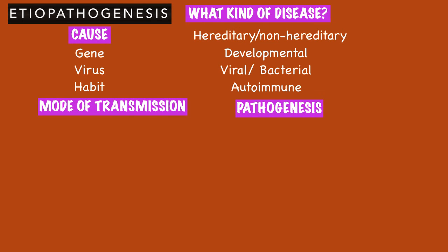Then write about the pathogenesis of the disease — how does the disease occur? For example, with the NAS1 gene defect in fibrous dysplasia, there is an osteoblastic differentiation and maturation problem. Make headings and write content under each one; this gives the examiner the idea that you know how to structure your answer and have studied well.